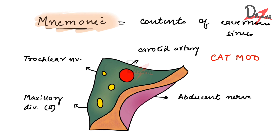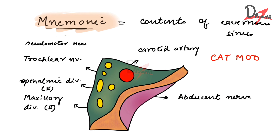M stands for the Maxillary division of the trigeminal nerve, the first O stands for the Ophthalmic division of the trigeminal nerve, and the second O stands for the Oculomotor nerve. So that was the mnemonic CAT MOO to remember the contents of the cavernous sinus easily.